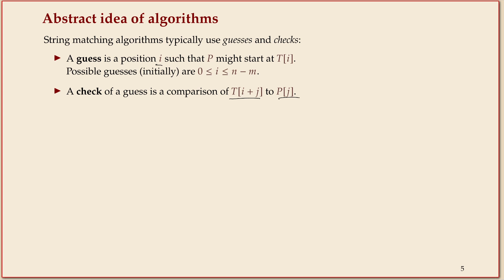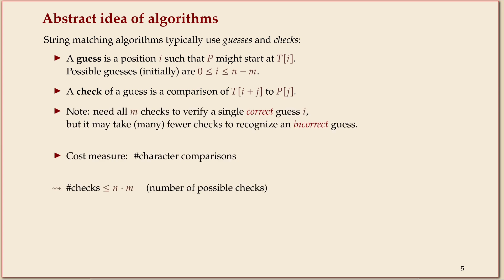There's a bit of an asymmetry here. If we want to show that some guess is correct, that indeed the pattern starts at position i in the text, you somehow at least implicitly have to do all the checks.